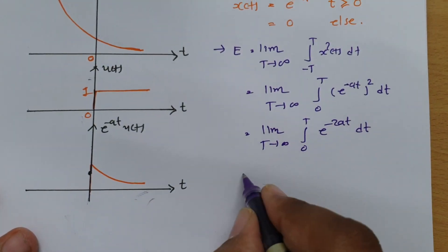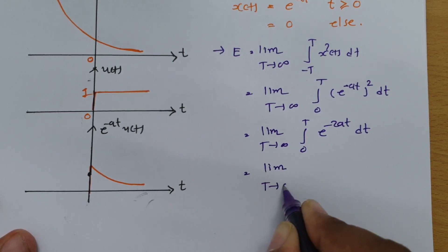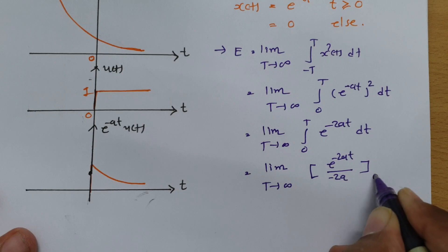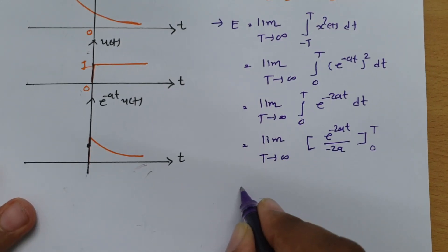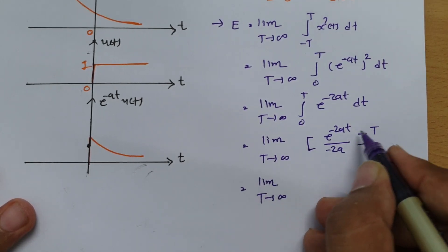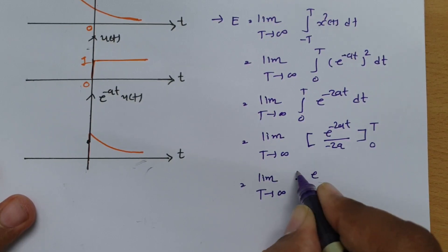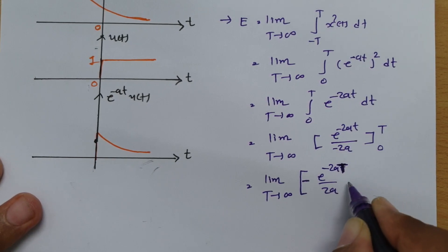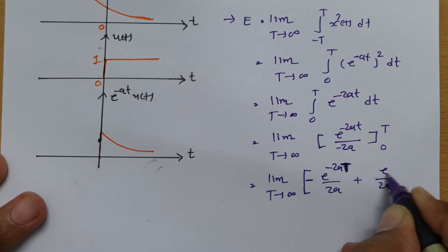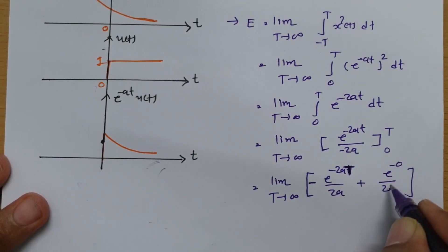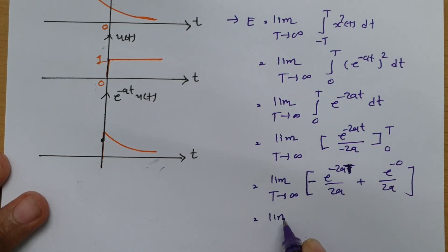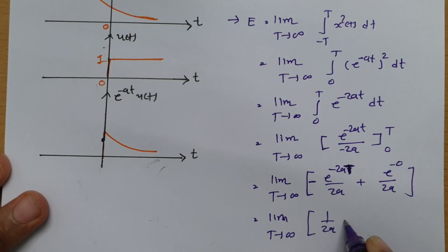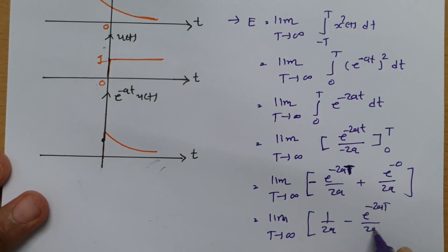Integrating e^(−2at) gives e^(−2at) divided by minus 2a. Placing the limits from 0 to T, we get minus e^(−2aT)/(2a) plus e^0/(2a). Since e^0 = 1, this simplifies to 1/(2a) minus e^(−2aT)/(2a).